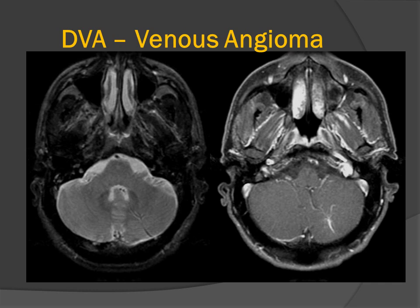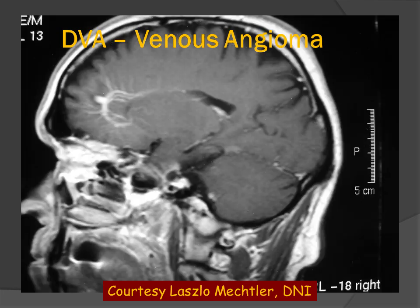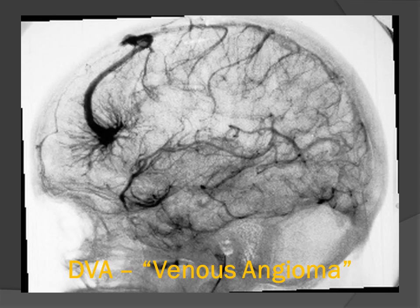Here is another example of a posterior fossa developmental venous angioma. We have the caput medusa of the multiple small collector veins and the dominant transcortical trunk or transmantal vein. Here is another right frontal lobe DVA. We can see the small collector veins and the dominant transcortical trunk, and in the sagittal image, the unique anatomy of multiple small veins collecting onto larger veins, which connect to the dominant transcortical or transmantal trunk.